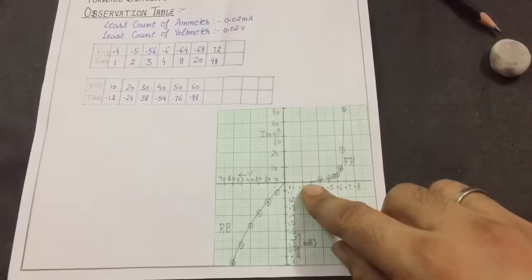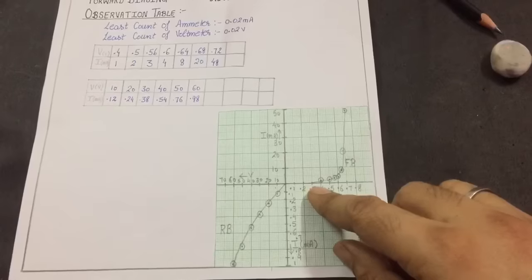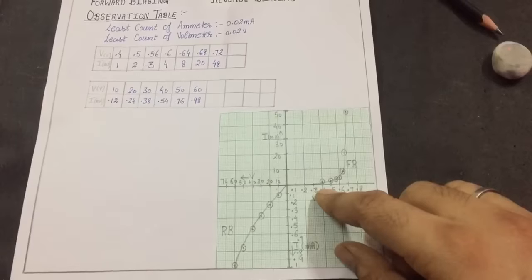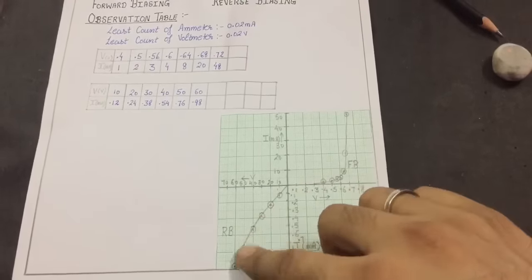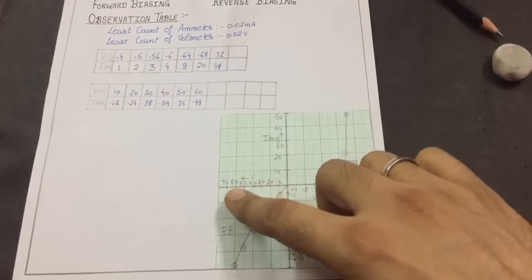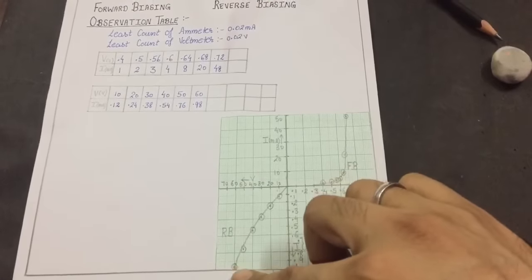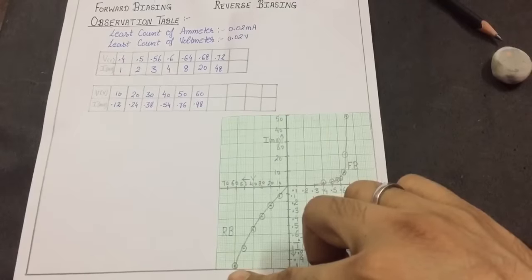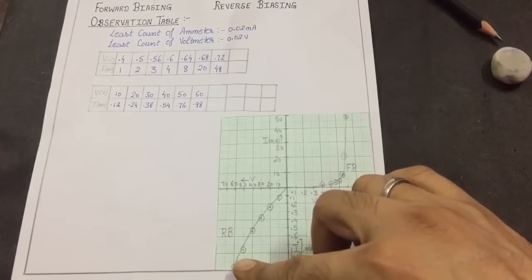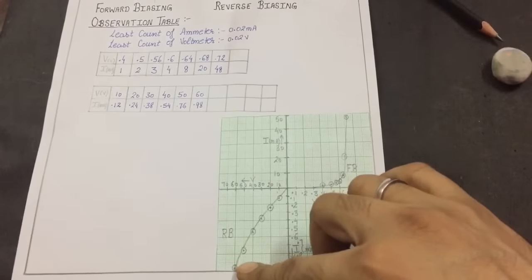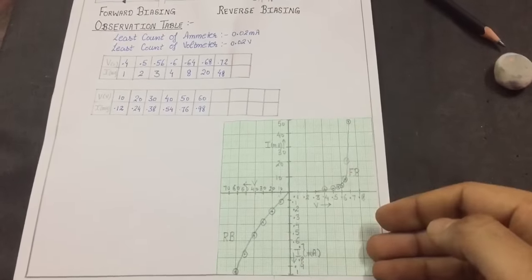Here we can see that the voltage at which current becomes non-zero for the very first time has a specific name — it is called the knee voltage. Similarly, in reverse bias mode, as voltage increases, at a certain point the current abruptly increases, which we saw going beyond the range of the ammeter. This is the breakdown voltage. This is the complete IV characteristics graph for a p-n junction diode.